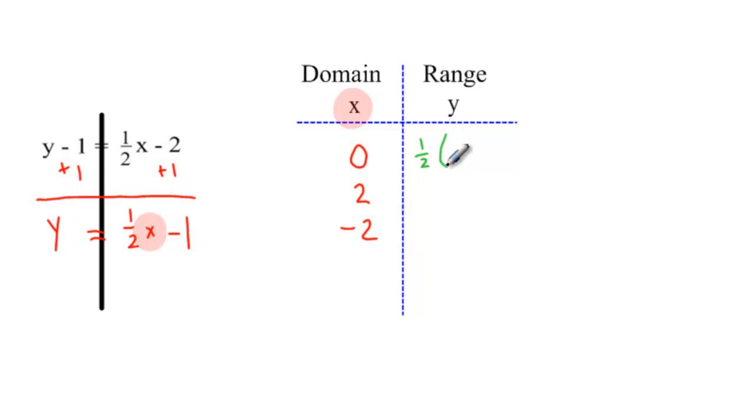1 half times 0 minus 1 and you get negative 1. Do the same for all three domains that you chose and you'll have three coordinates at the end. That one's going to equal to 0 and my last domain that I chose was negative 2. 1 half times negative 2 minus 1 is negative 2.